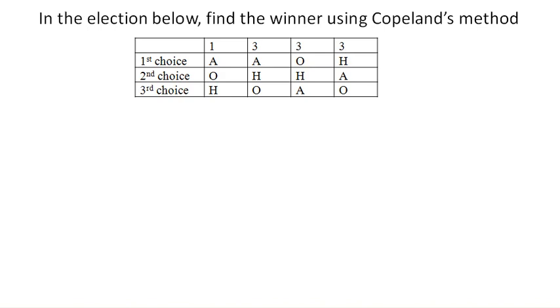The way it works is we're going to make pairwise comparisons between the options. We're going to start with A and compare A to O, A to H, and O to H. So we're going to make three different pairwise comparisons here, and we're going to look at relative ordering.